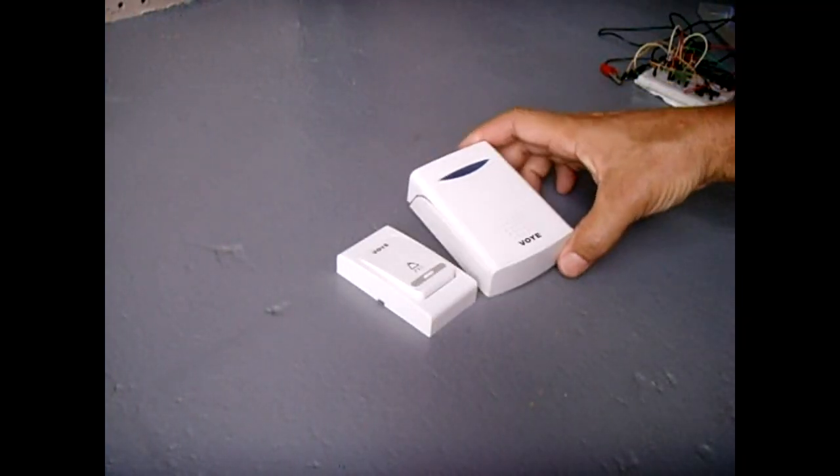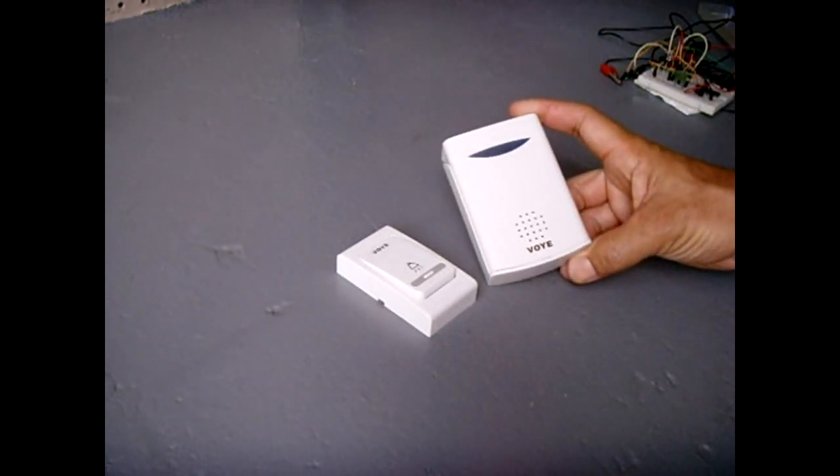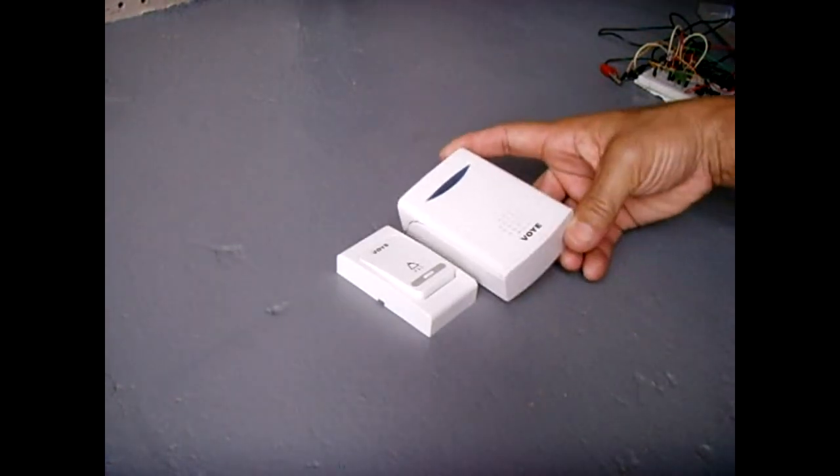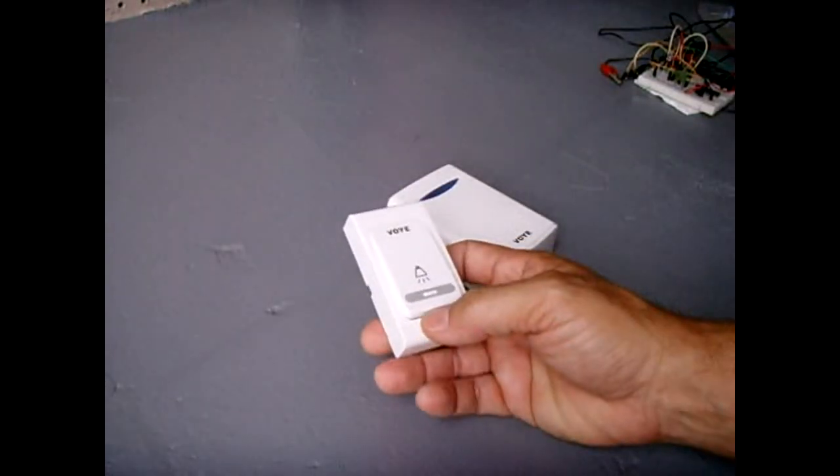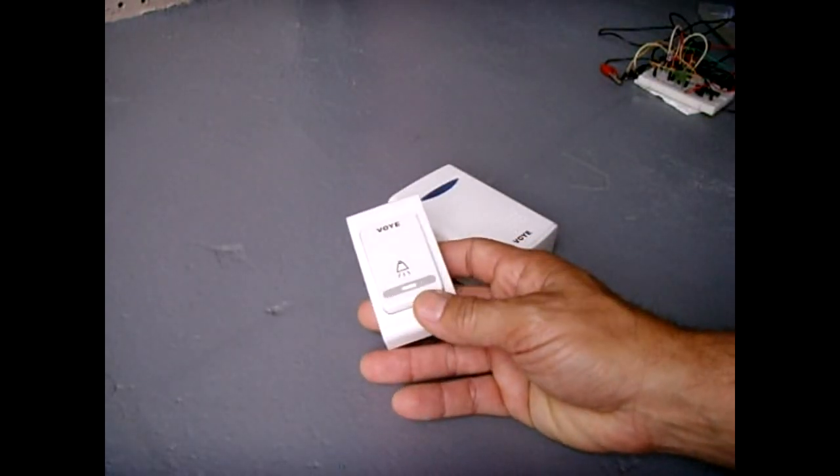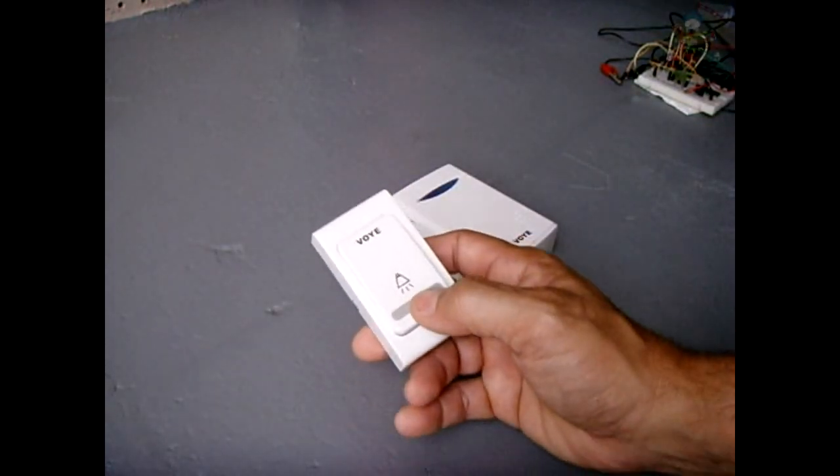In today's video I'm going to show you how you can take one of these inexpensive wireless doorbells which can be purchased on eBay for around six dollars shipped and convert it into a really nice remote control which you can use for triggering circuits. I'm going to show you two ways that can be done.